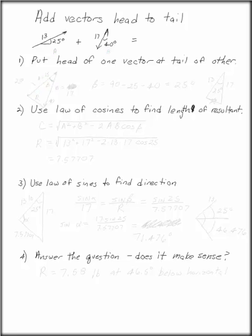Add vectors head to tail. Now we have two vectors. One is 13 at 25 degrees to the horizontal, and the other is 17 at 40 degrees to the vertical. The first thing to do is to put the head of one vector at the tail of the other. So if we put this one going up and this one coming back down again,